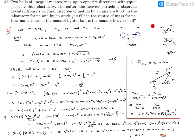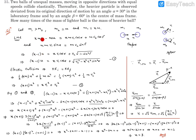Along the y-direction, initial vertical momentum was zero, so the vertical components must cancel: m1*v1*sin(alpha) = m2*v2*sin(gamma). These are two equations. We need to eliminate gamma since it is neither given nor required. We substitute sin(gamma) from the y-equation and write cos(gamma) = sqrt(1 − sin²(gamma)), so gamma can be eliminated between the two equations.